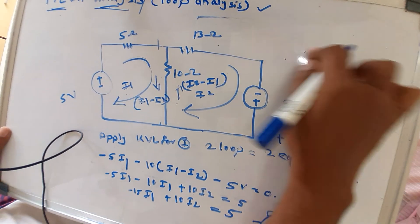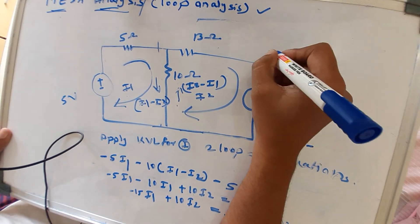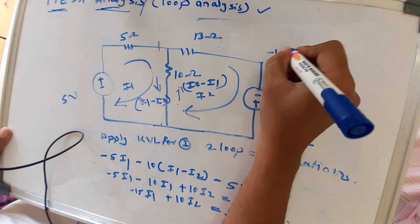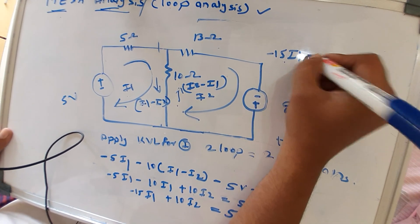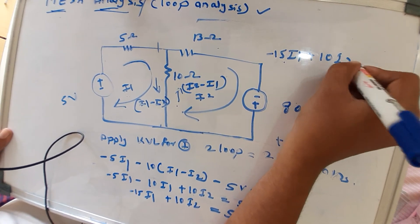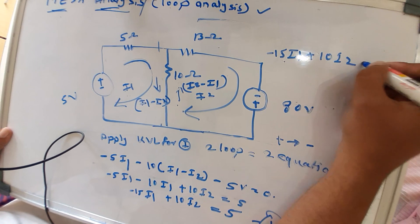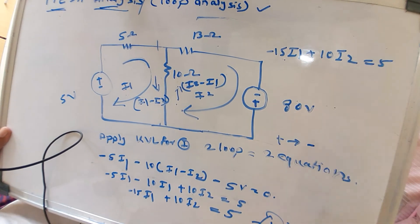So the first loop equation is: 15·I1 − 10·I2 = −5 (noting that the instructor writes it as 50·I1 + 10·I2 = 5 on the board based on the specific circuit values used).